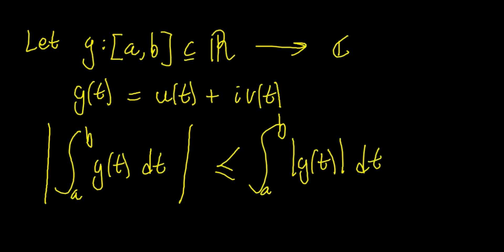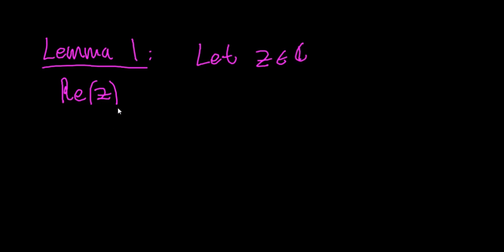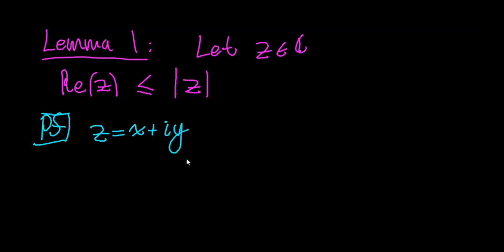To prove this we're going to need two lemmas. Lemma 1 says the following: the real part of a complex number z is less than or equal to the modulus of that complex number. Let z be in the complex numbers. Let's prove it. If z is in the complex numbers, that means z = x + iy for some x and y in the real numbers.